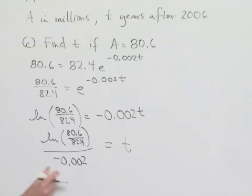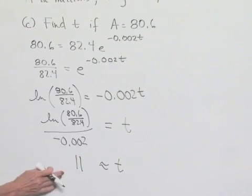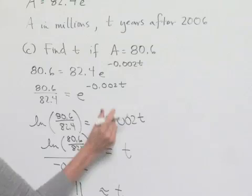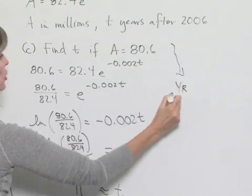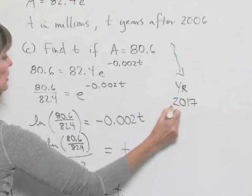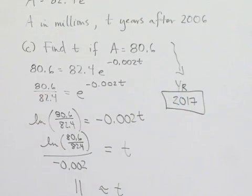Using a calculator, we can determine that our t value is approximately 11. And now, 11 years after the year 2006 gives us our final result. And that means in the year 2017, we end up with the population being 80.6 million.